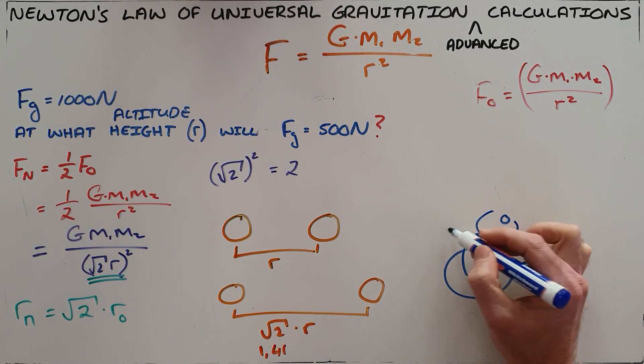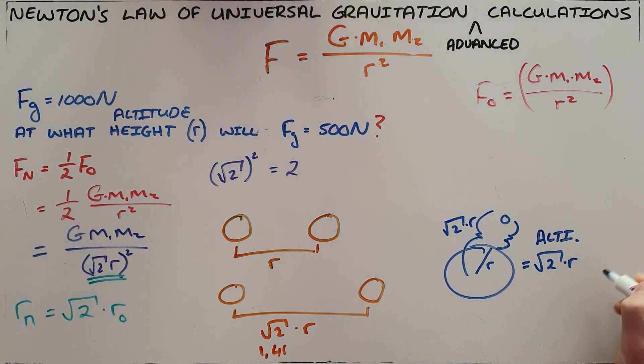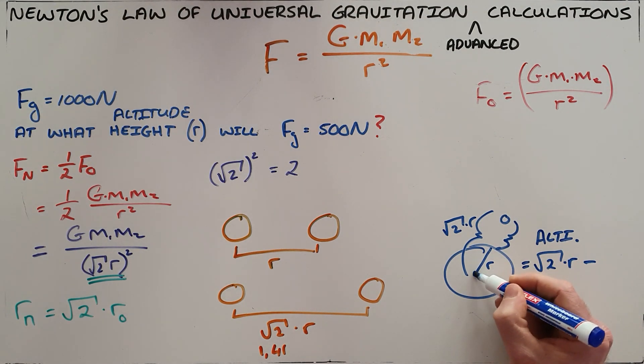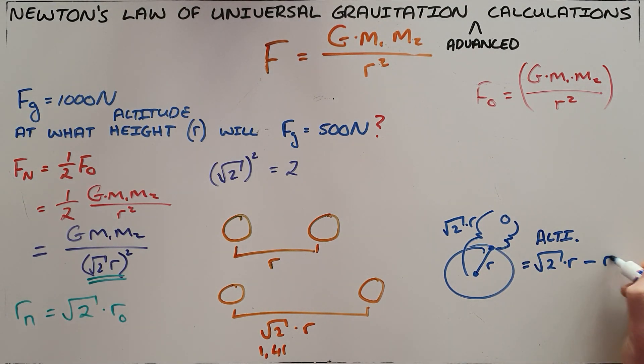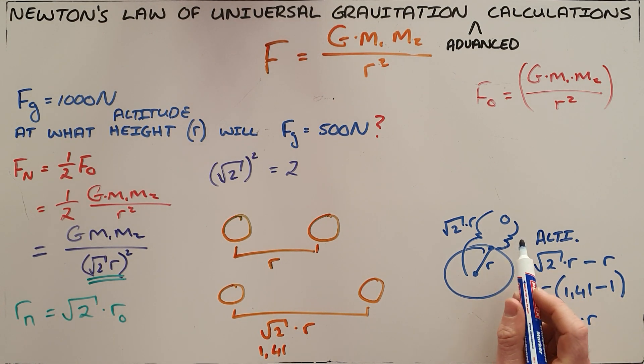The altitude equals √2 times r minus the distance from the center to the surface, which is just r. This gives us, if we simplify that, 1.41 minus 1, which tells us that the new distance is 0.41 times r above the surface of the earth.